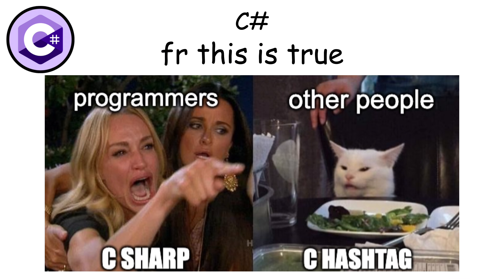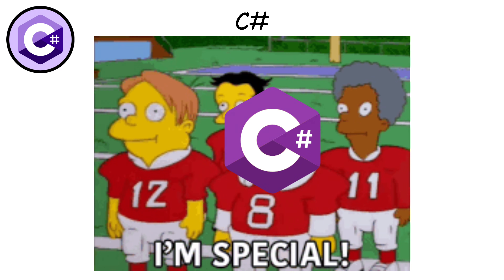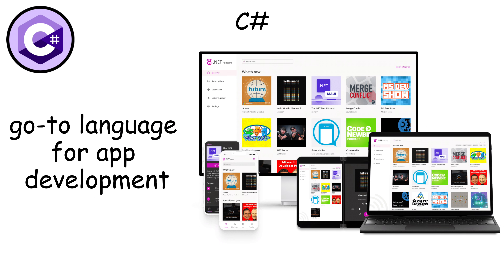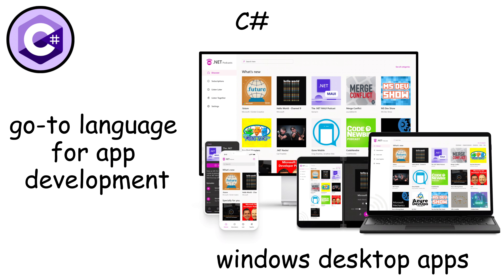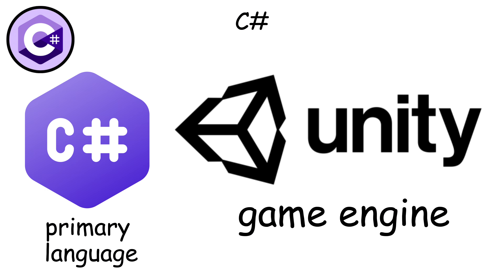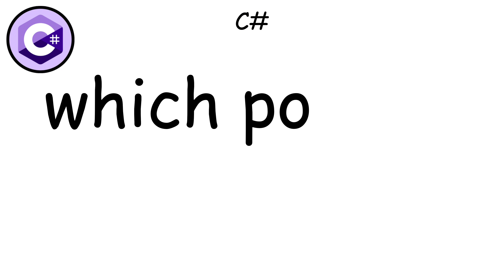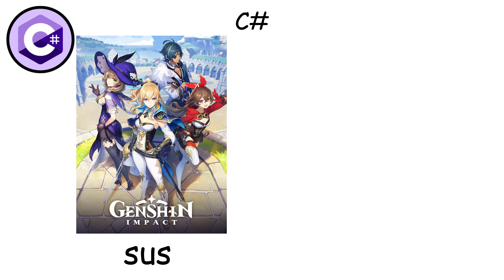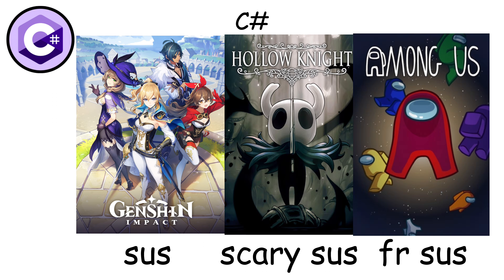C-sharp — not C-hashtag, by the way. What makes C-sharp special is its tight integration with the Microsoft ecosystem. It's the go-to language for building Windows desktop applications, and it's also the primary language for Unity game development, which powers games like Genshin Impact, Hollow Knight, and Among Us.